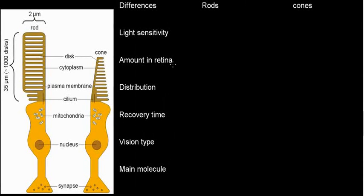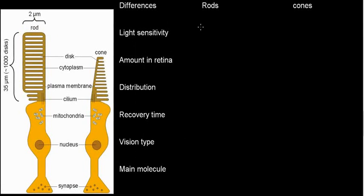The difference between rods and cones: first of all, rods are way more sensitive to light — very, very sensitive. Even one single photon can cause an action potential. So for rods I'll write high sensitivity, and for cones, low — much lower than rods.